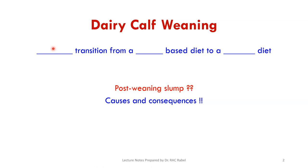If the transition is not smooth, there will be something called a post-weaning slump — a drop in something after weaning. You need to know what causes this post-weaning slump, and what the consequences are: what really happens, and what are the short-term and long-term consequences.